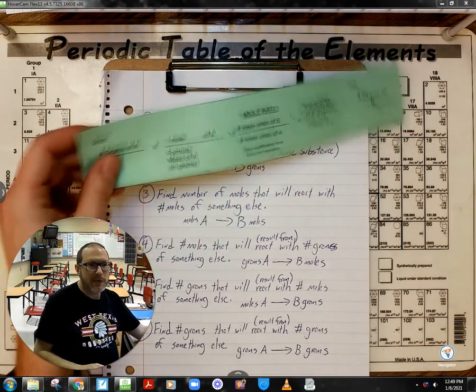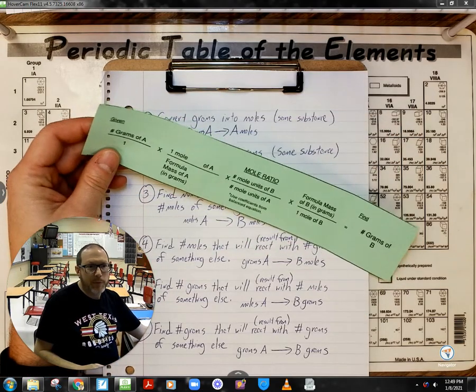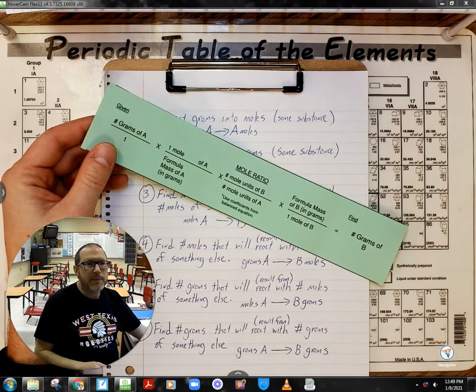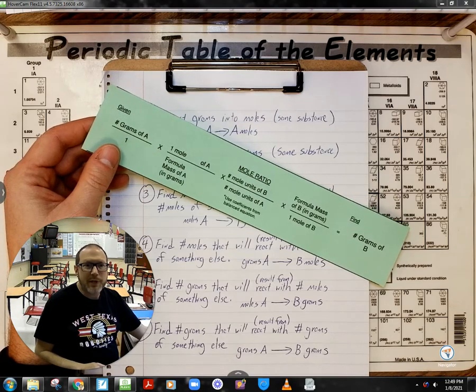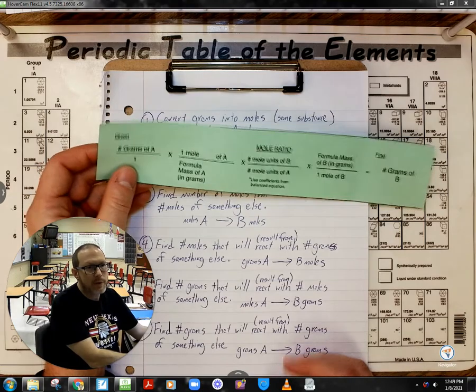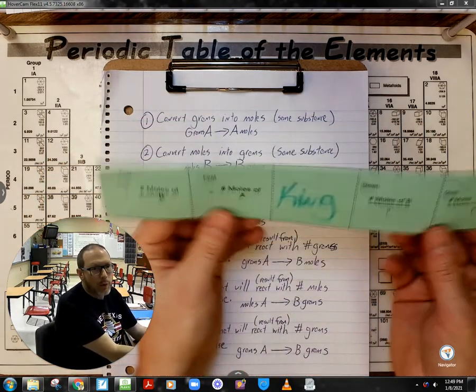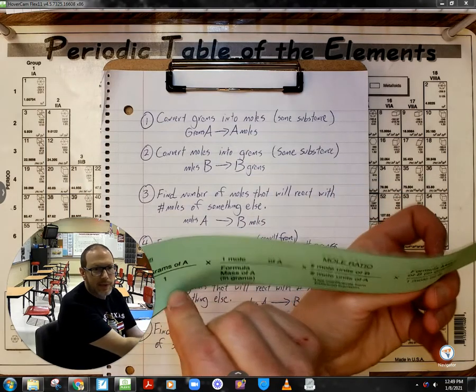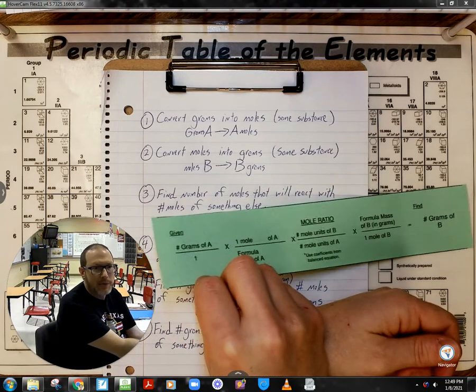What you're going to need for this is a molar football, which the template is included in the package you can download. You need to print that out double-sided so that when you flip it horizontally like this, the text is facing up both times.